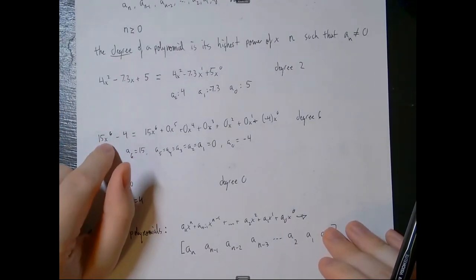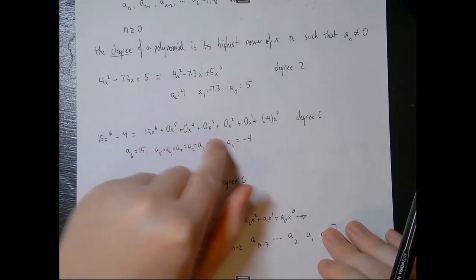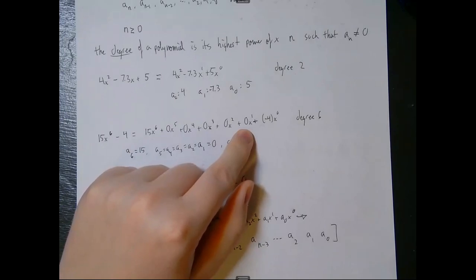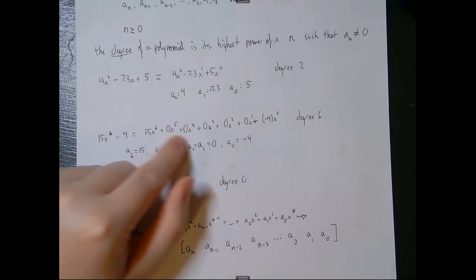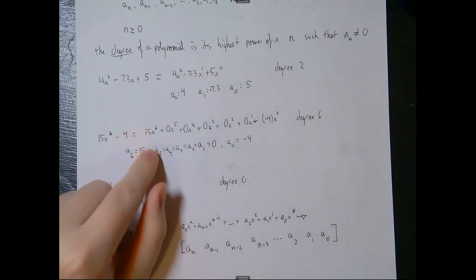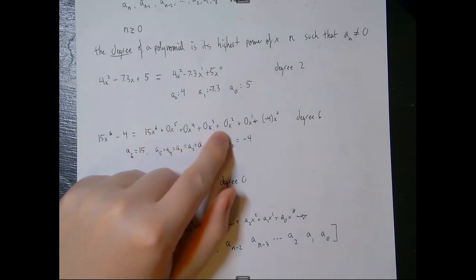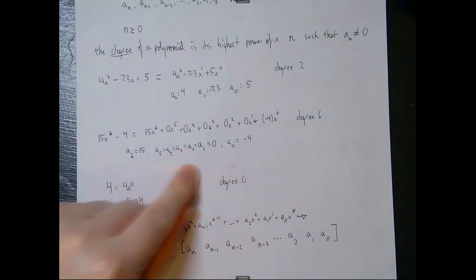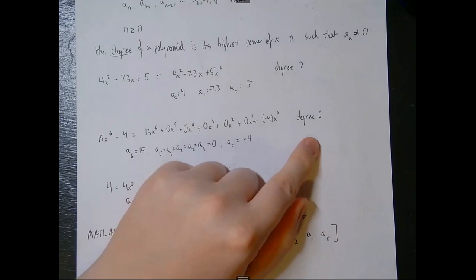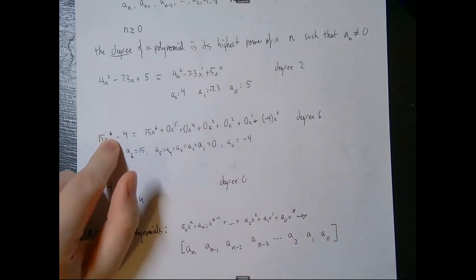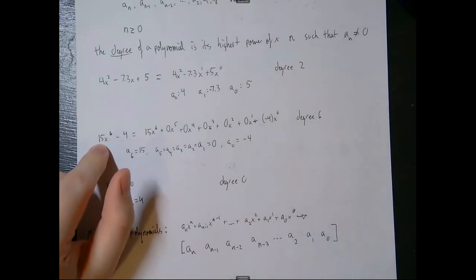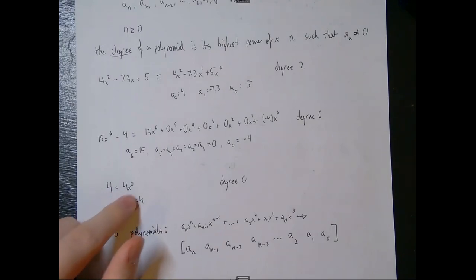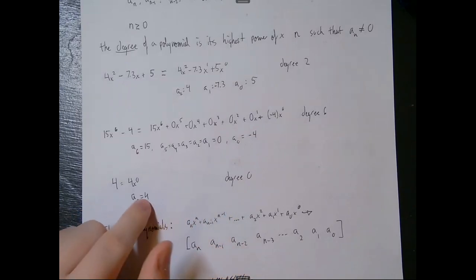The next example is 15x to the 6th power minus 4. I've explicitly written in the x to the 5th, x to the 4th, x cubed, x squared, and x to the 1st terms since they don't appear — they're all 0 times each term. So this is 15x^6 + 0x^5 + 0x^4 + 0x^3 + 0x^2 + 0x + (−4)x^0. This is a degree 6 polynomial because x to the 6th has a non-zero coefficient of 15. And 4 is a degree 0 polynomial with the only coefficient being 4.